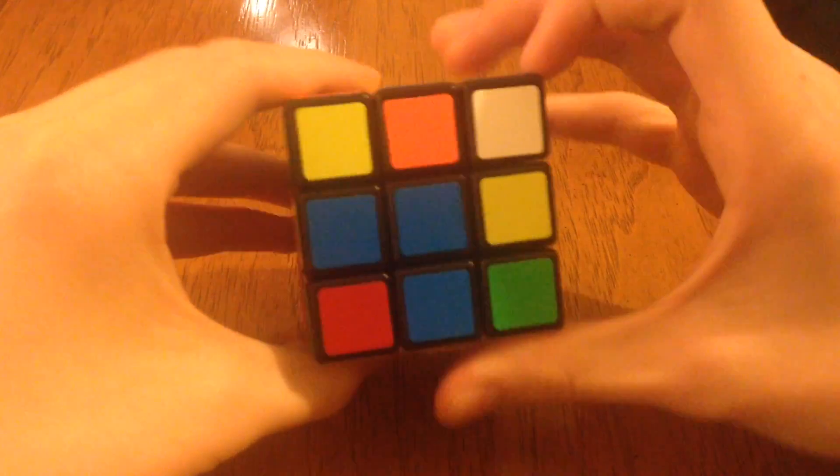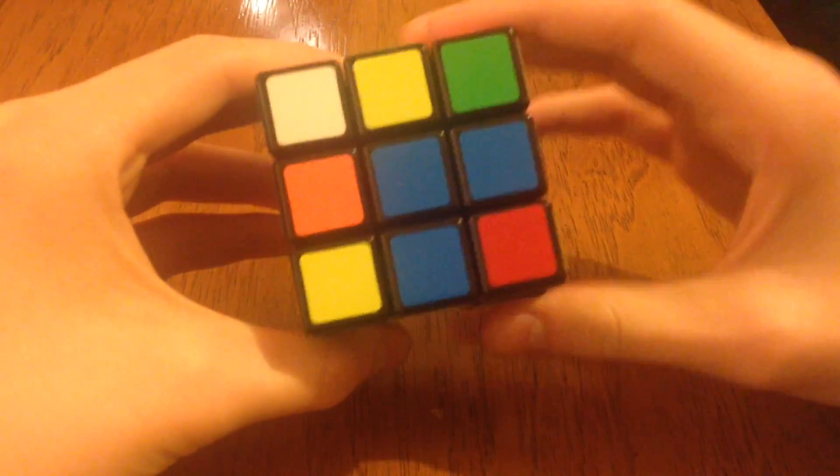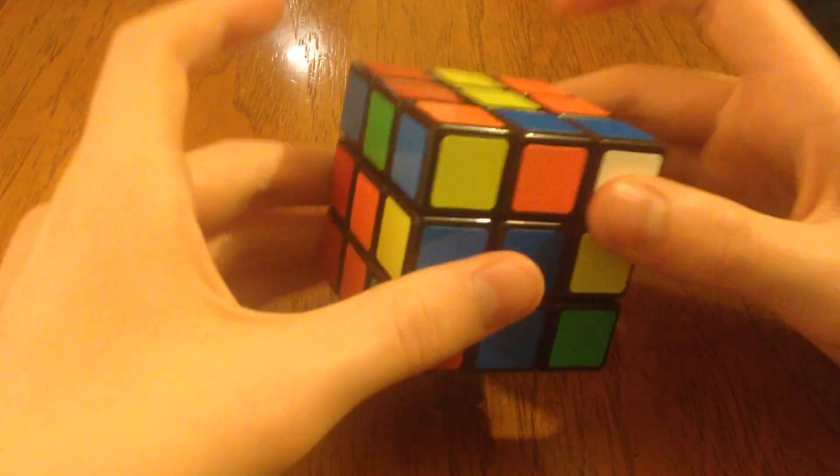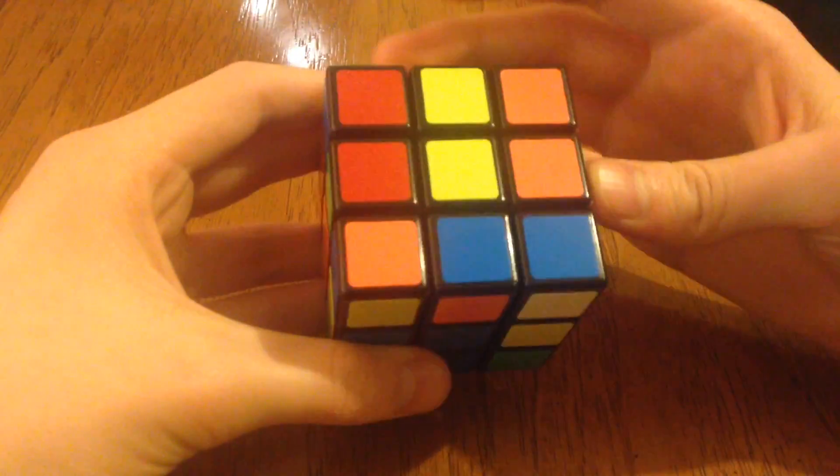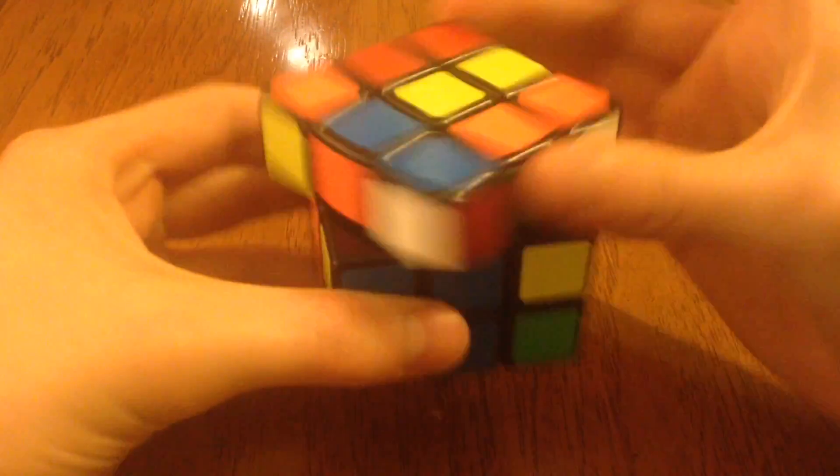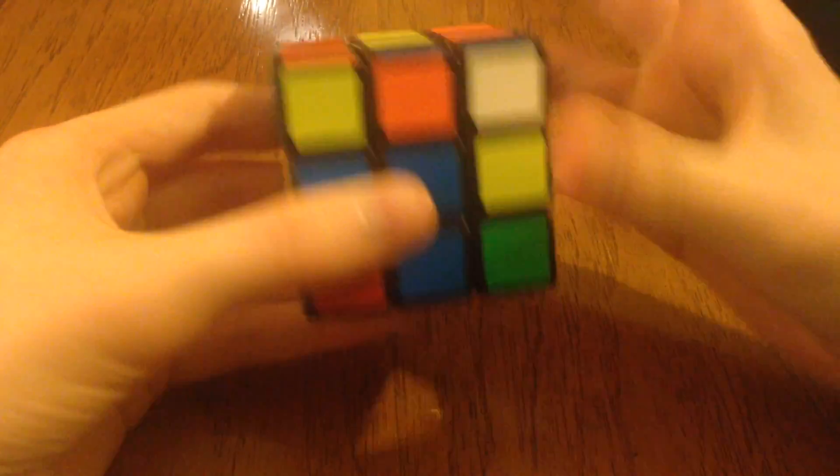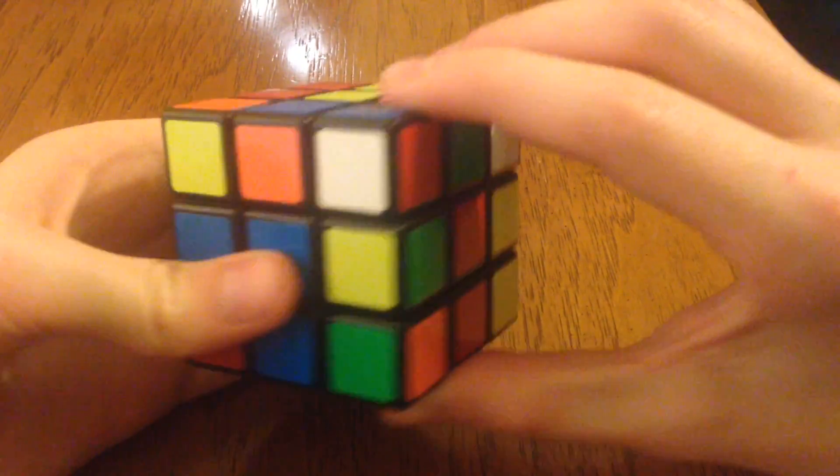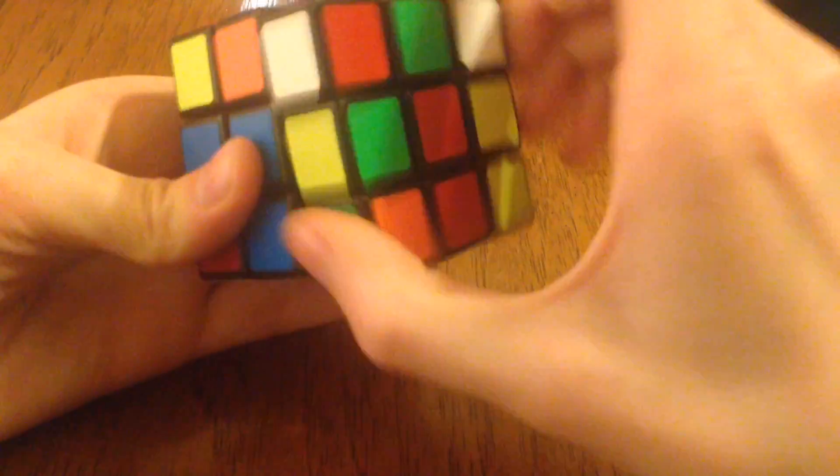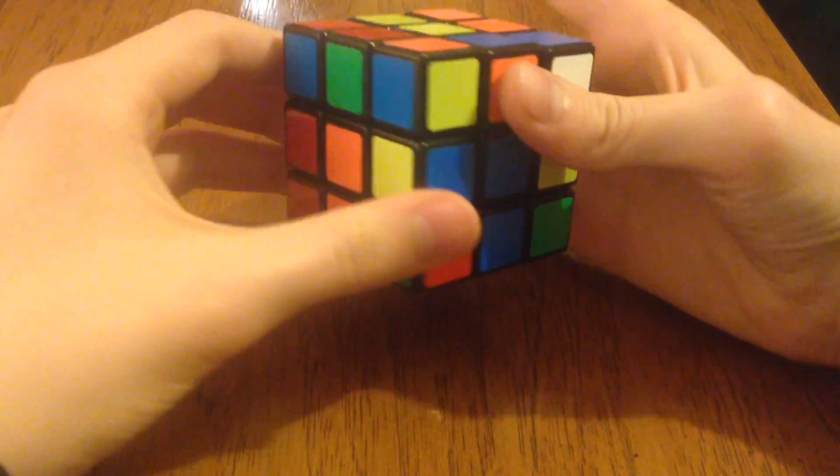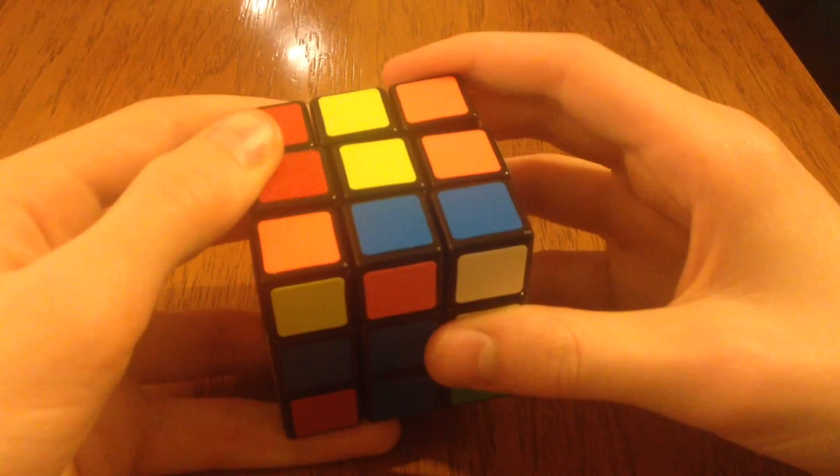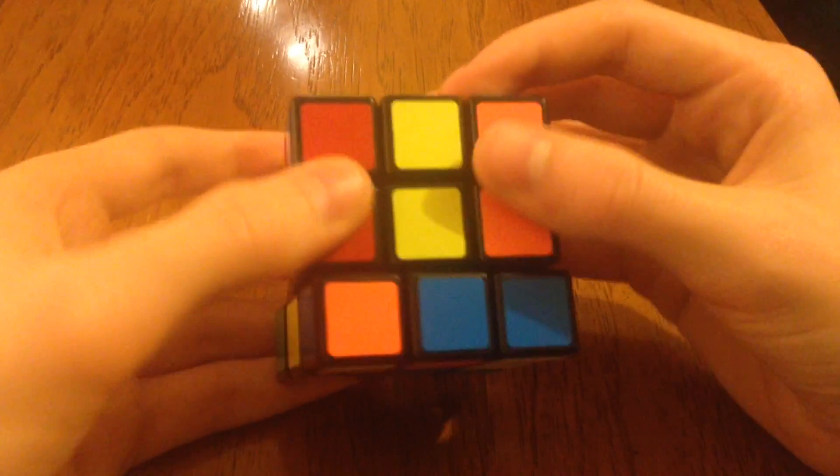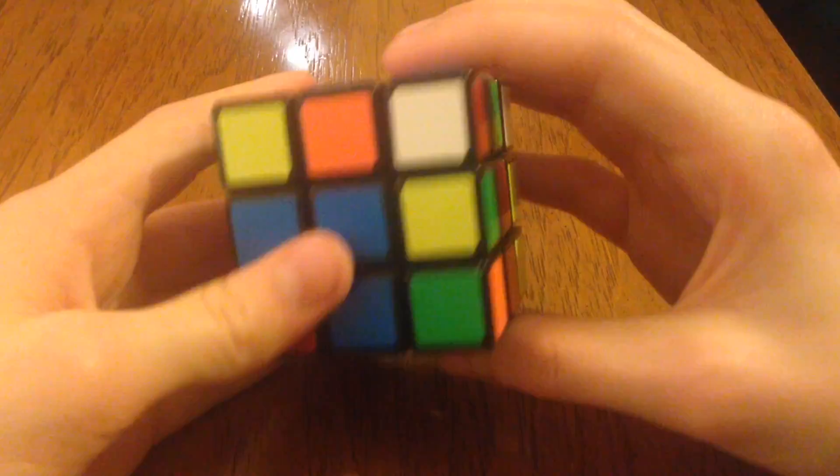If it's F prime, you'll do it backwards, counterclockwise. Same with U. U means up, which it should be top, I think. But it means up. And so U, normal, will be clockwise. U prime would be counterclockwise. Same with R is right, clockwise, and counterclockwise. L is left, clockwise, and counterclockwise. Really, it's a quite simple concept when you get used to it.